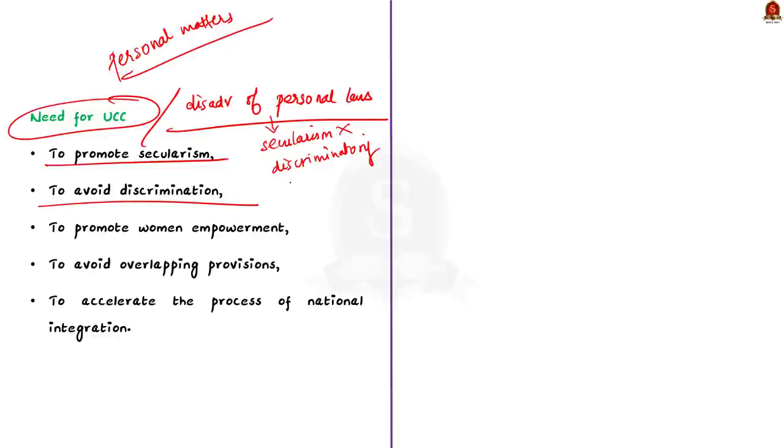Thirdly, we need Uniform Civil Code to promote women empowerment. Some laws are extremely patriarchal and misogynistic. This leads to subjugation and mistreatment of women. In order to avoid this, we need a Uniform Civil Code. Fourthly, overlapping provisions in different laws can be avoided. Finally, UCC will help accelerate the process of national integration and it would create a sense of oneness.